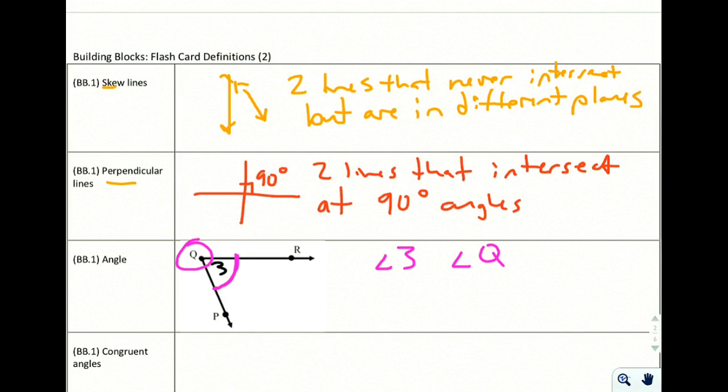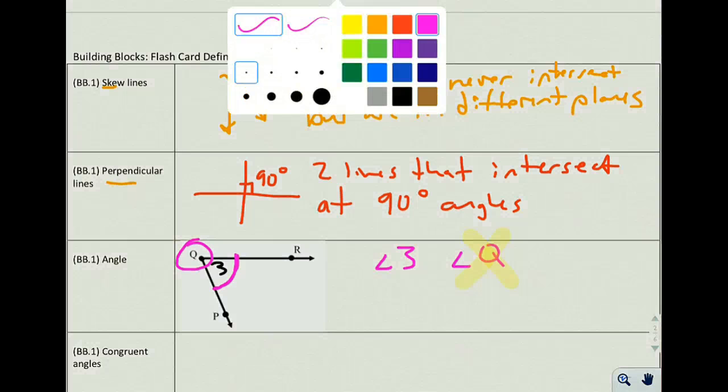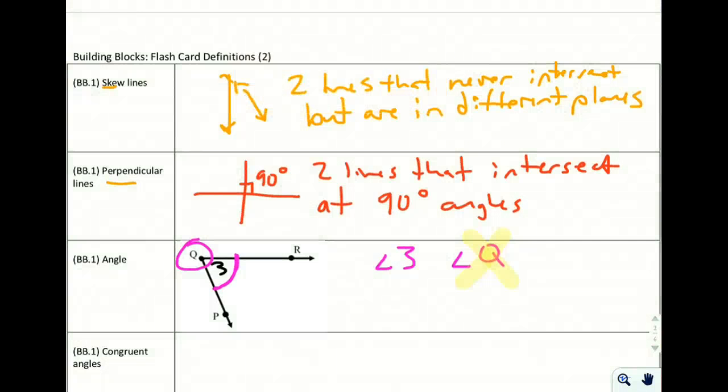Neither of those names are my favorite. The numbered angles can sometimes be okay. The single letter is generally a bad idea. So you can do it, but generally a bad idea. Other names you can use is the three-letter names. And that's where you start on one end, you go to the vertex, and then you bounce back out. So if I were to call it angle RQP, or I could go the other way and call it angle PQR, all of these would be acceptable. Any point out here on the ray, the vertex isn't always in the middle, and then another point out here on the ray.